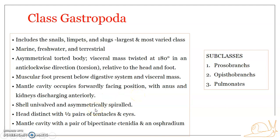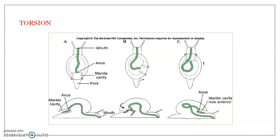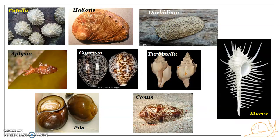The mantle cavity occupies a forward-facing position because of torsion. The shell is univalved — only a single shell — and is asymmetrically spiral. This shell coiling can be toward the right side, known as dextral coiling, or toward the left side, known as sinistral coiling. The same species can have both, but one type tends to be predominant. The head is distinct with one or two pairs of sensory tentacles and a pair of eyes. The mantle cavity provides a pair of bipectinate ctenidia or gills, and an osphradium, which is a chemosensory structure.